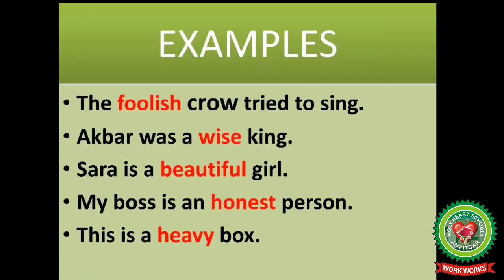Now observe these examples of adjective of quality. The foolish crow tried to sing — 'crow' is a noun; what kind of crow? Foolish — so 'foolish' is an adjective of quality. Akbar was a wise king — what kind of king? Wise — so 'wise' is an adjective of quality. Sarah is a beautiful girl — what kind of girl? Beautiful — adjective of quality. My boss is an honest person — what kind of person? Honest — adjective of quality. This is a heavy box — what kind of box? Heavy — adjective of quality.